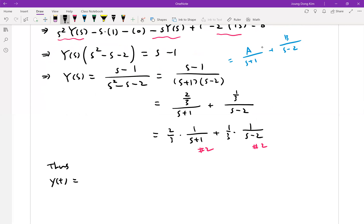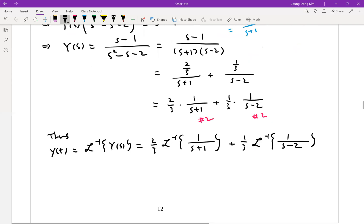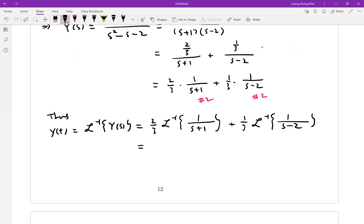Your yt which is equal to inverse Laplace transform of y s is equal to two third inverse Laplace transform of one over s plus one plus one third inverse Laplace transform of one over s minus two. Just compare with your table two third and that is exactly e to the minus t and plus one third e to the 2t. That's it this is solution.